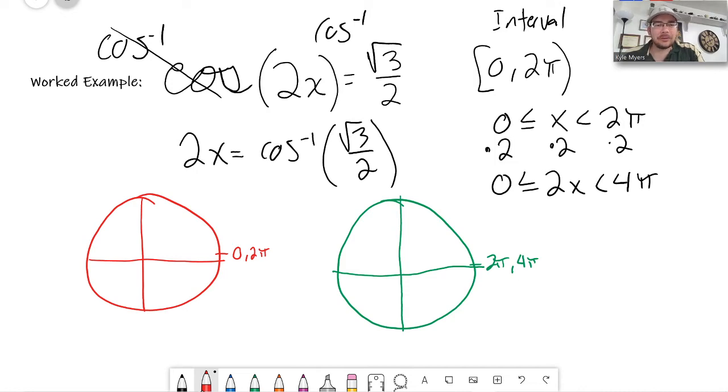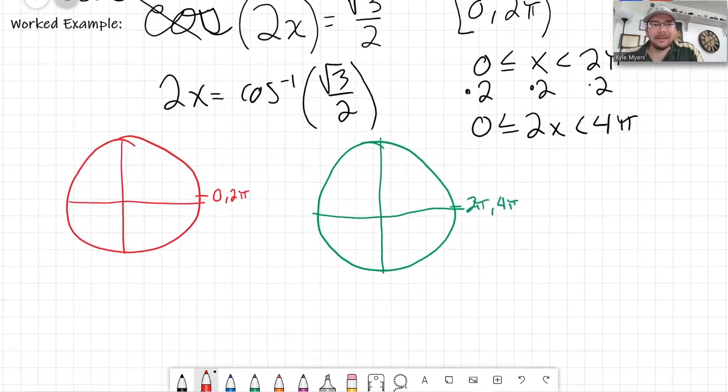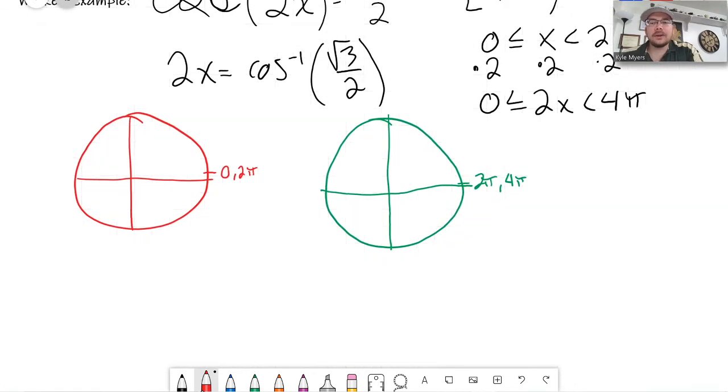So that way I have all my possible answers here. And I didn't draw really good circles, but it's all good. So if I want to know cosine inverse of root 3 over 2, well, there's actually a table for that.